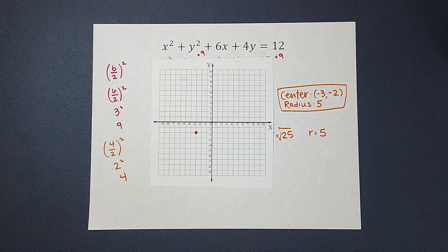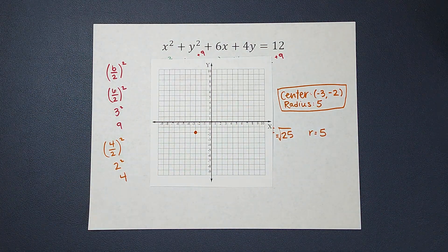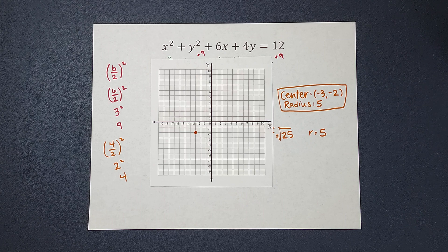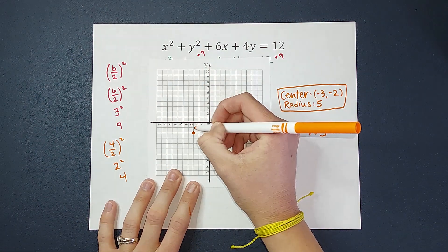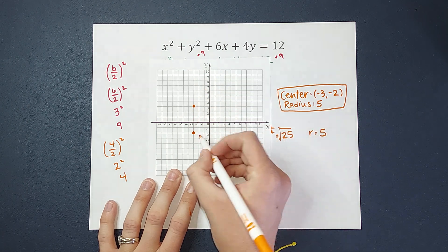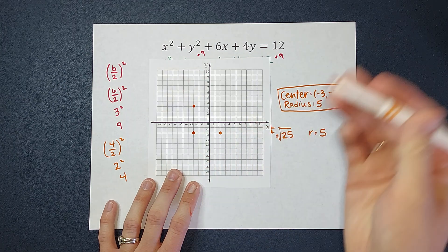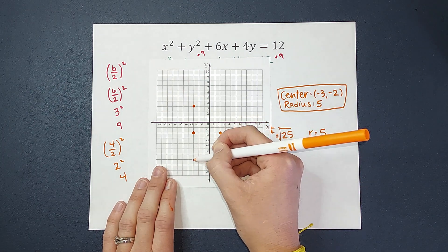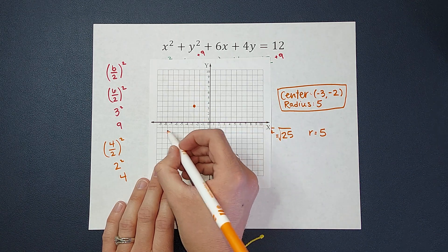And then my radius is 5, meaning I go out 5 in every direction. But the easiest way for us to represent that is to go up, down, right, and left 5. So I'm going to start at the middle, go up 5, 1, 2, 3, 4, 5. To the right 5, 1, 2, 3, 4, 5. Down 5, 1, 2, 3, 4, 5. And you guessed it, left 5, 1, 2, 3, 4, 5.